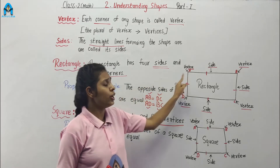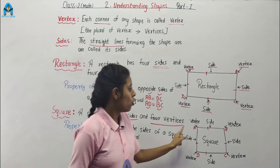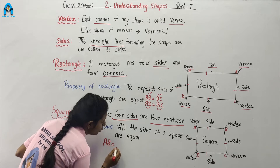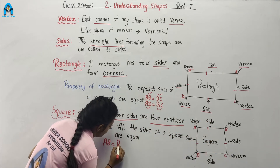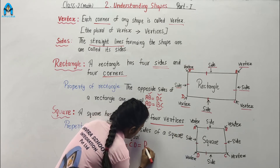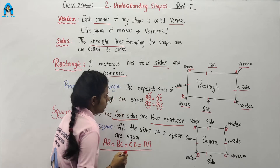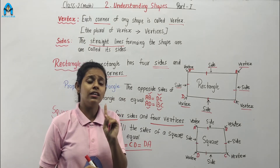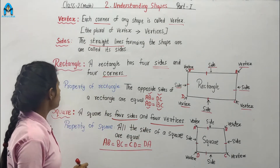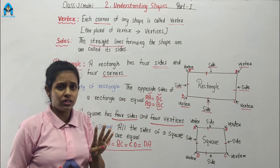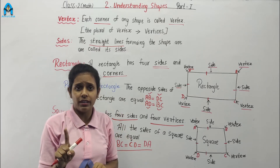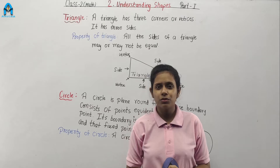In rectangle, only opposite sides are equal. But in square, all sides are equal. Side AB equals BC equals CD equals DA — all four sides are equal. Difference between rectangle and square: both have four sides and four corners, but in square all sides are equal.